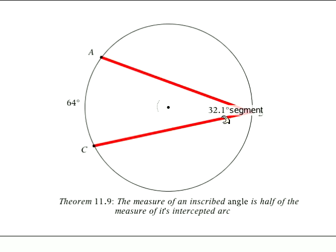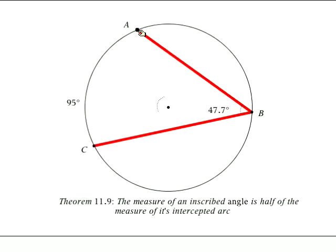Now sometimes the software does funny things with tenths of a degree. But as you can see, I'm going to move this around. As I move point A, the inscribed angle is roughly half of the intercepted arc.